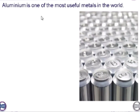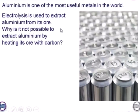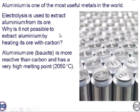Now extracting aluminum. Aluminum is one of the most useful metals in the world, and electrolysis is used to extract it from its ore. It is not possible to extract aluminum by heating its ore with carbon because aluminum is more reactive than carbon. The ore bauxite has a very high melting point of 2050 degrees Celsius.